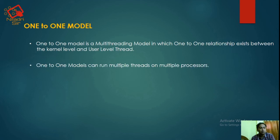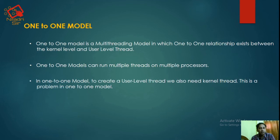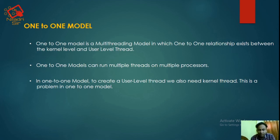One-to-one models can run multiple threads on multiple processors. Each processor has a separate thread. In one-to-one model, to create a user-level thread, we also need a kernel-level thread — this is a limitation of the one-to-one model, as it is dependent on kernel-level threads.